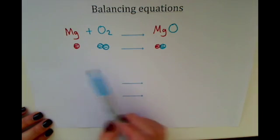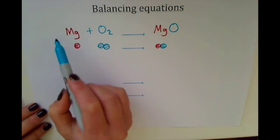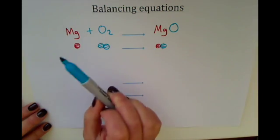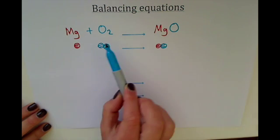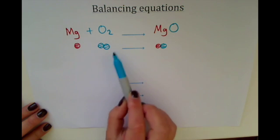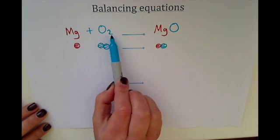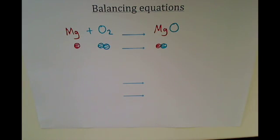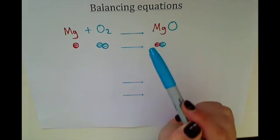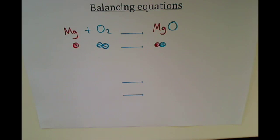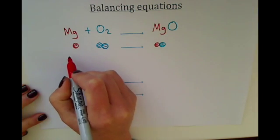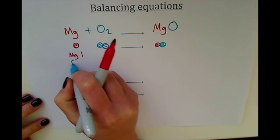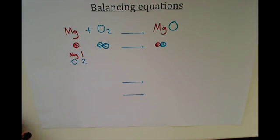We now need to make sure that we have the same number of atoms either side of the equation, and the only way we do that is by putting numbers in front of the substances. We cannot change any small subscript numbers by the molecules, because these tell us what the molecule or compound is. We can only put multiplying numbers at the front of the substances. First of all, we count how many of each element we've got on each side — we've got magnesium: one, and oxygen: two on the left-hand side.